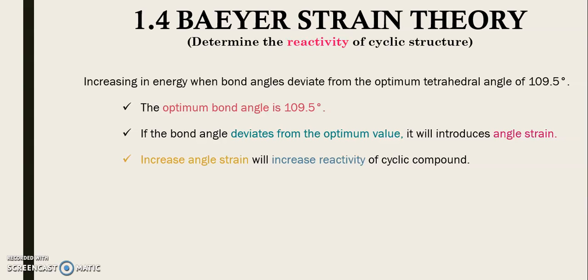For the Bayer strain theory, as I mentioned in the previous video, it can be used to predict the reactivity of cyclic compounds. Why does cyclopropane undergo addition reactions while cyclopentane undergoes substitution reactions? Why can cyclopropane undergo ring opening reactions but larger rings like cyclopentane cannot?